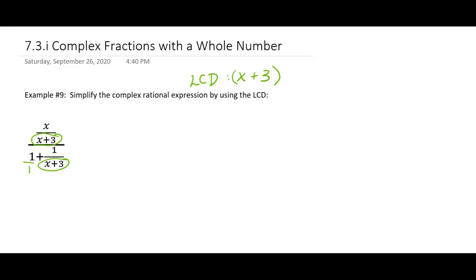So I'm going to recopy the problem. x over x plus 3 over 1 plus 1 over x plus 3, and then everybody gets multiplied by the LCD, which is x plus 3.